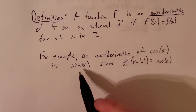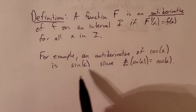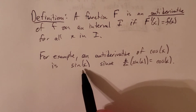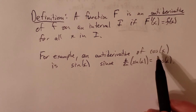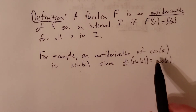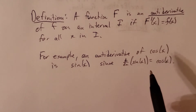Now, why did I say 'one of' and 'an antiderivative'? Well, it turns out there's a lot more. In fact, there are infinitely many antiderivatives of cosine of x.